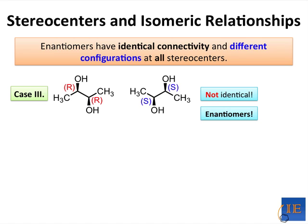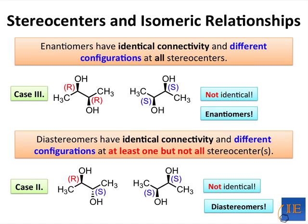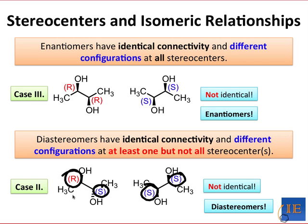If the two molecules in question differ not at all stereo centers, but at at least one, then we can say that they are diastereomers of one another. Looking at case two, one of the stereo centers had the same configuration in both molecules, while the other stereo center did not match. So these molecules differ at at least one, but not all, of their stereo centers — they're not identical, and they're diastereomers of one another. If you're more comfortable assigning configurations than trying to superimpose molecules, this can be a nice way to determine the stereoisomeric relationship between molecules by looking at the configuration of their stereo centers.